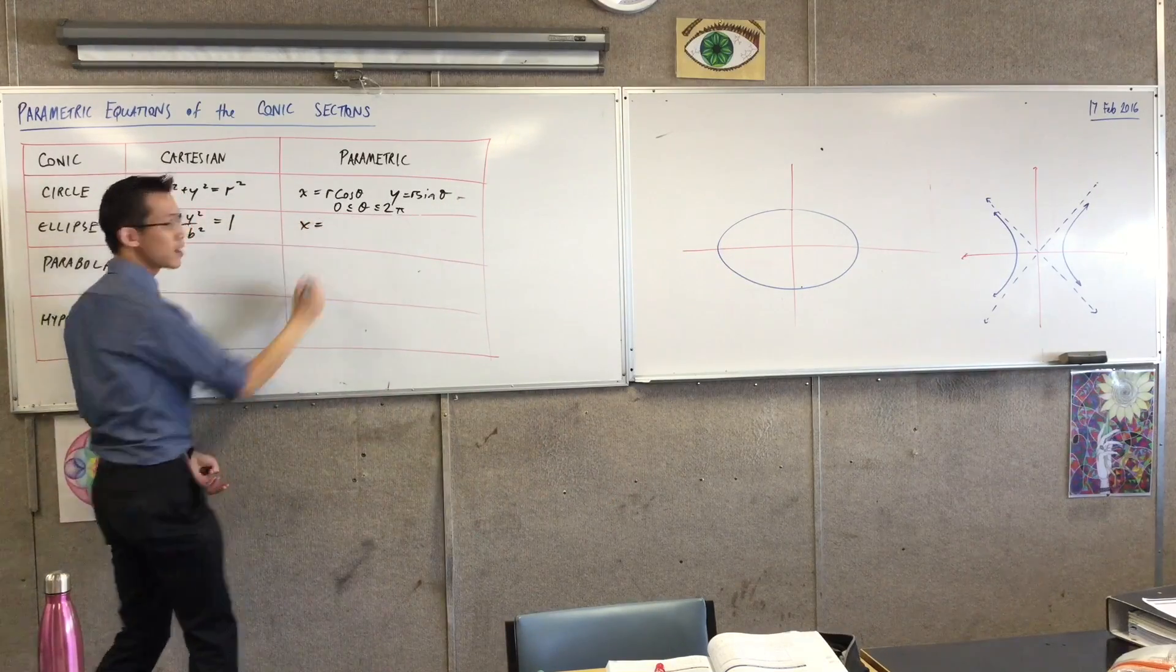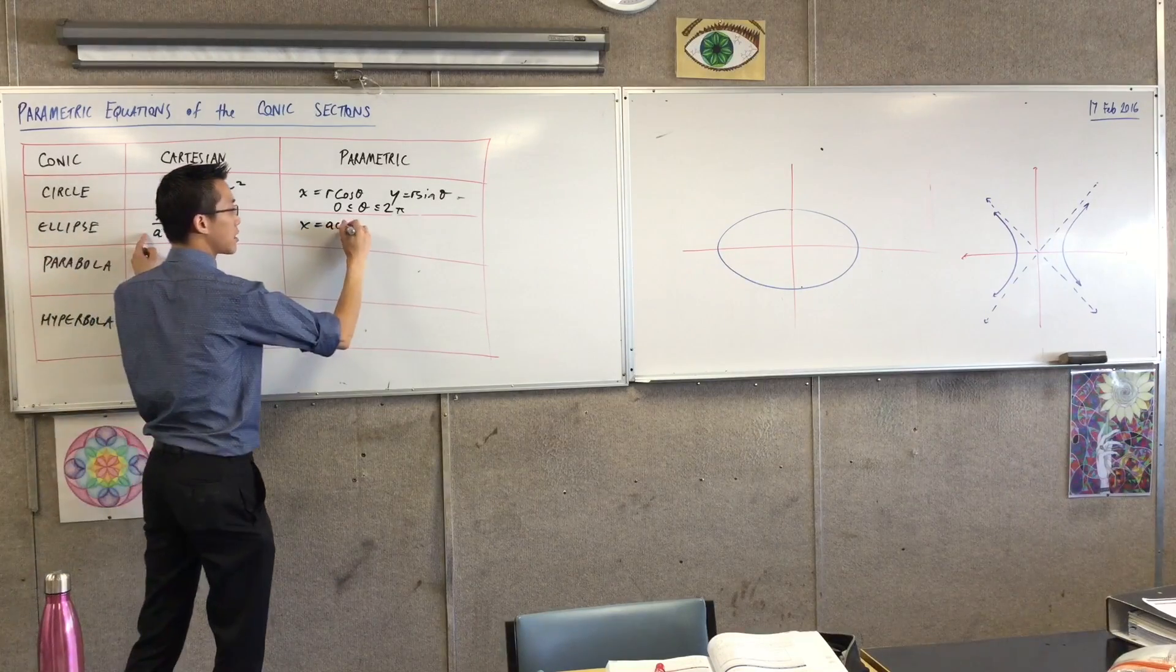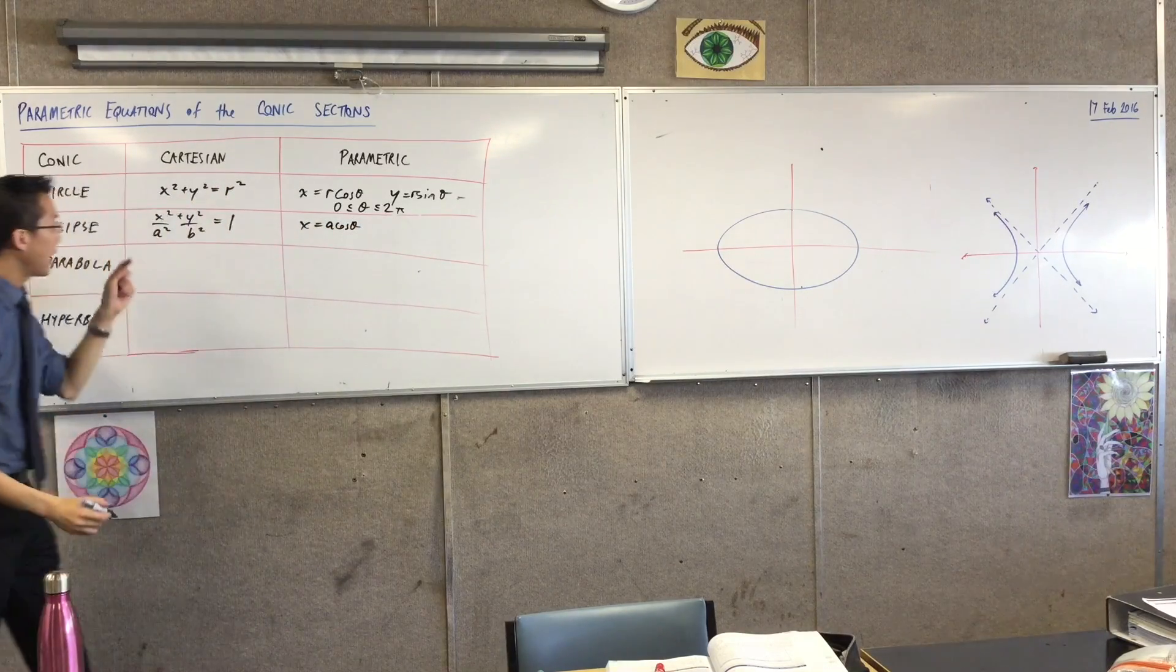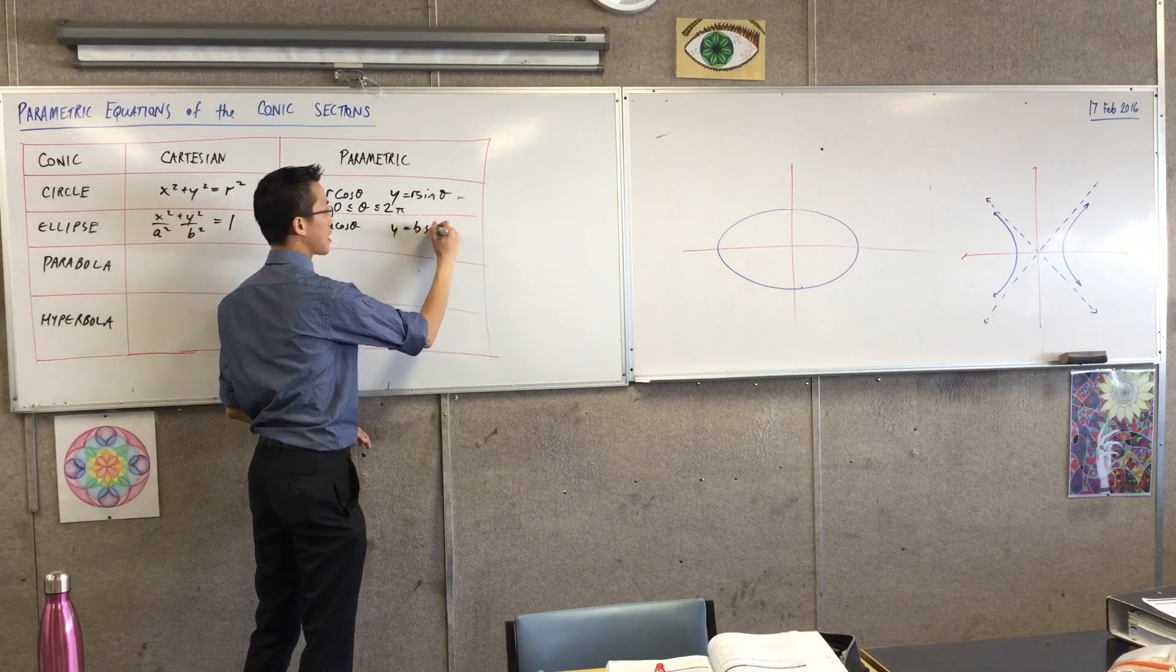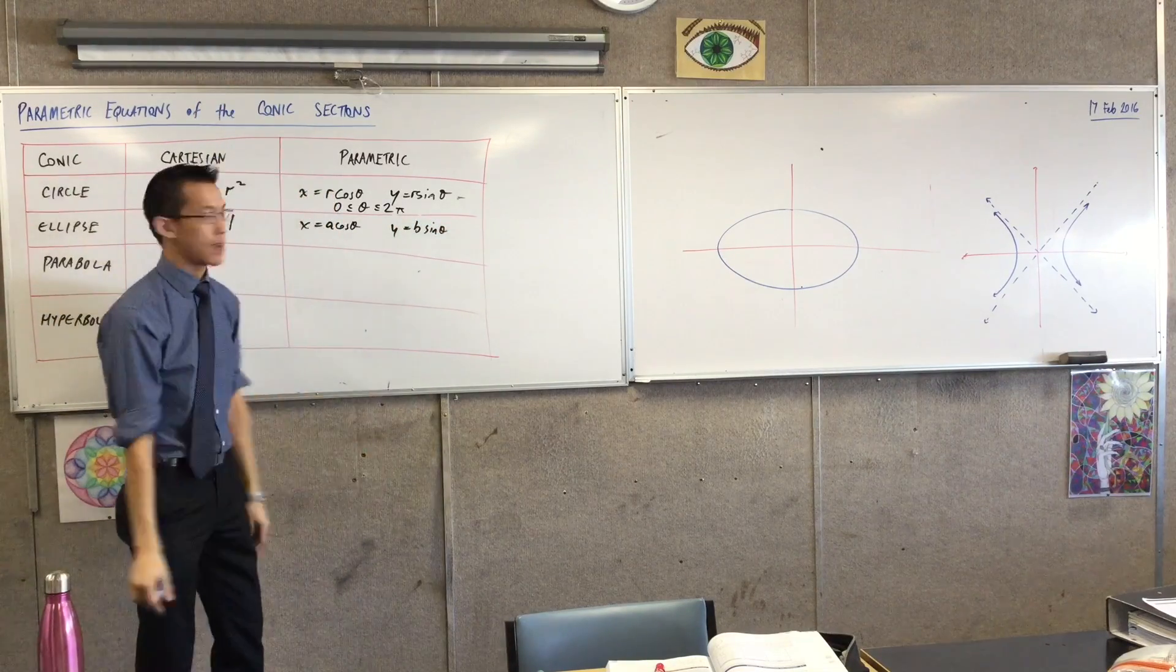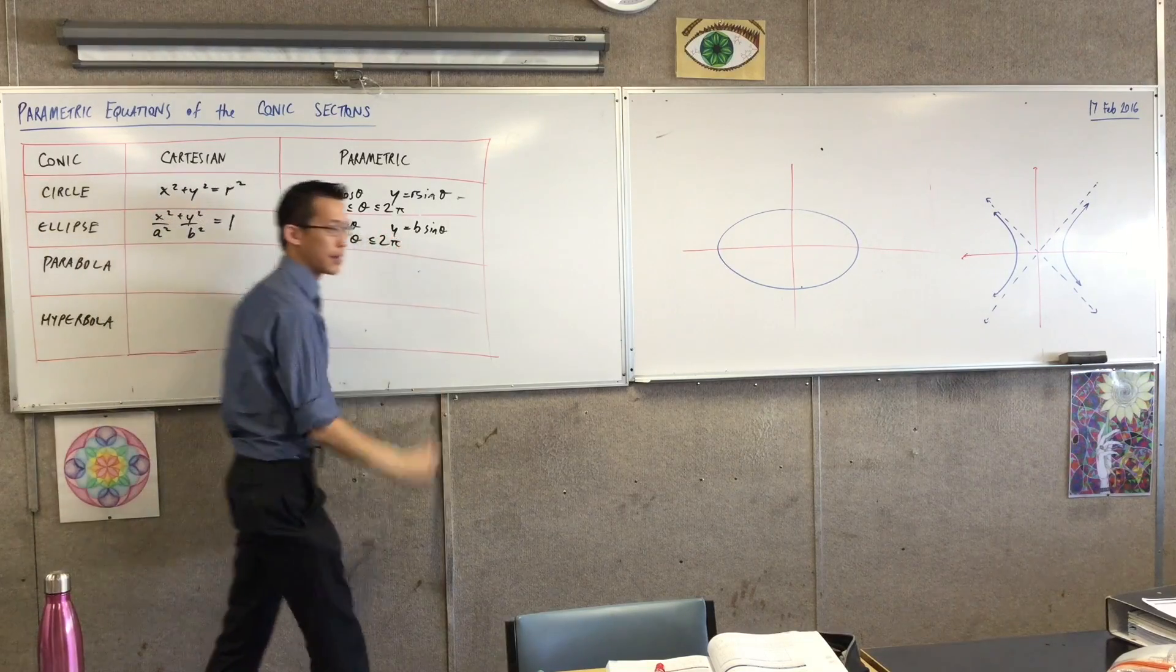So instead of being at cos theta sine theta, there's no r to speak of because it doesn't have a radius. You're going to be at x equals a times further away from the origin, so you get a cos theta, and you'll be b times further than the origin speaking vertically, so you'll be at b sine theta. And we have the same restriction, 0 to theta to 2 pi.